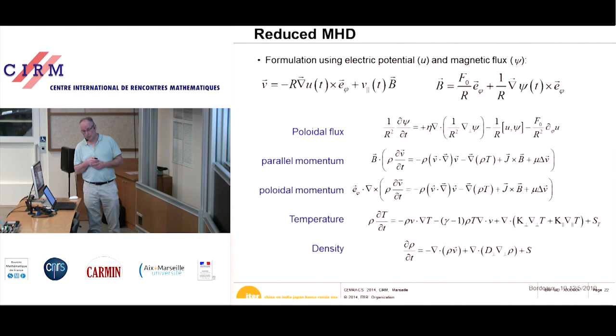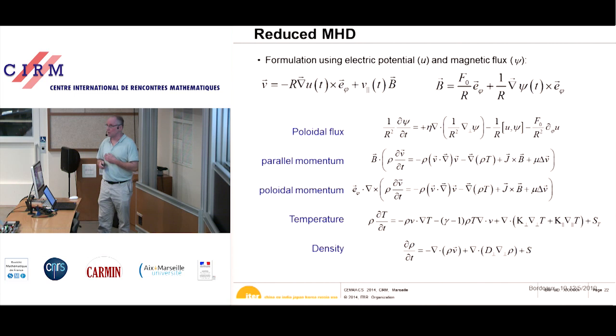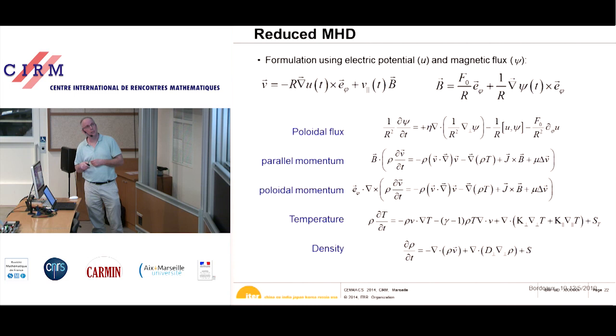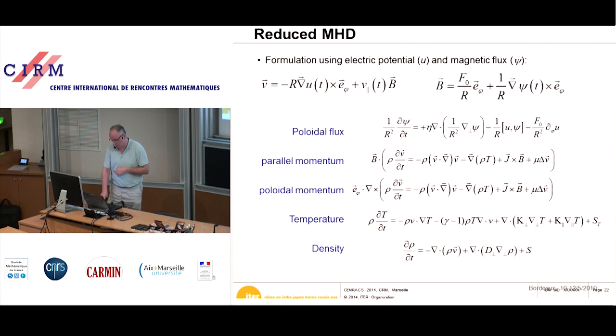Inserting the reduced MHD ansatz into the full equations gives evolution equations for the poloidal flux, parallel momentum, poloidal momentum, temperature, and density — these are the equations actually solved in our simulation code. We also solve the full MHD model, but for all practical applications the reduced MHD model is accurate enough and much easier to solve.